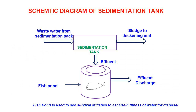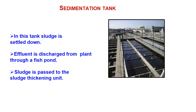The last part is the sedimentation tank. After aerobic secondary treatment, water goes to the sedimentation tank. Much of the clean water comes out and may undergo tertiary treatment before discharging to water bodies, lakes, or rivers. The thick sludge with water goes for sludge thickening to remove water, and then the thick sludge goes back for recycling. In the sedimentation tank, sludge settles down, effluent is discharged through a fish pond, and sludge passes to the sludge thickening unit for further water removal.